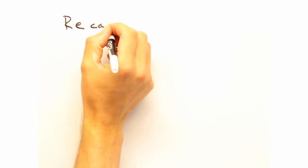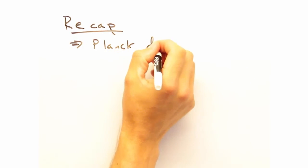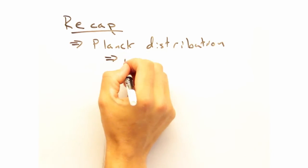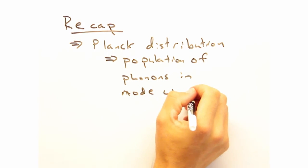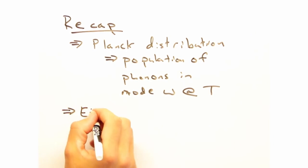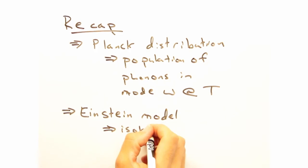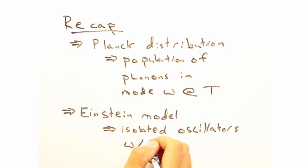Okay, so that's about all we want to cover today. As a recap, today we introduced the Planck distribution, which describes the population of phonons as a function of temperature. We then applied Einstein's model of isolated oscillators to the heat capacity of phonons, and obtained pretty good agreement with experiment at high temperatures.